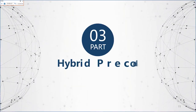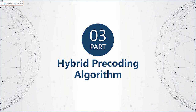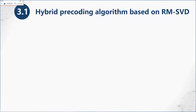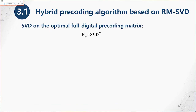The third part is the hybrid precoding algorithm. First, we consider the RMSVD algorithm. The algorithm is mainly composed of two parts: the design of the initial radio frequency precoding matrix and the update of the initial precoding matrix. The initial radio frequency precoding matrix is constructed by performing SVD on the optimal full digital precoding matrix, as shown in the equation.